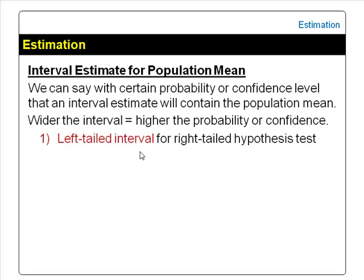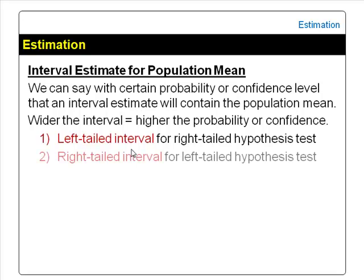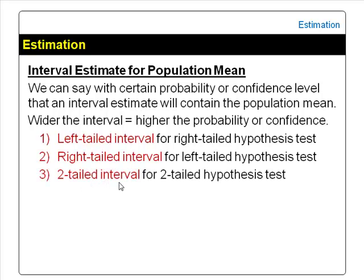There are three types of confidence intervals: left-tailed, right-tailed, and two-tailed confidence intervals. Keep in mind that when we do a right-tailed hypothesis test, we will estimate a left-tailed confidence interval. When we do a left-tailed hypothesis test, we estimate a right-tailed confidence interval. And when we do a two-tailed hypothesis test, we estimate a two-tailed confidence interval.